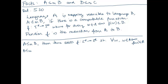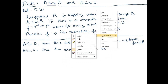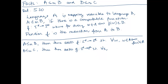We also have, because B is mapping reducible to C, that there exists a function G which maps Σ* to Σ*, such that for every string X: X is in B if and only if G of X is in C. I've applied definition 5.20 twice — once to the reduction from A to B, and once to the reduction from B to C — assigning the functions variable names F and G.